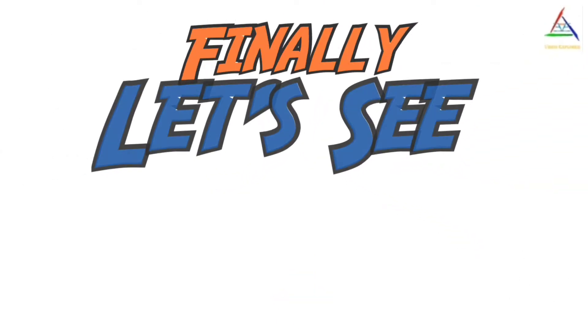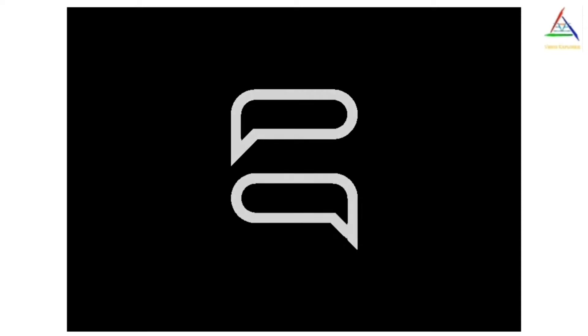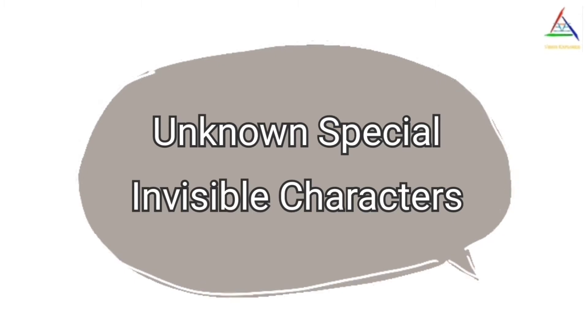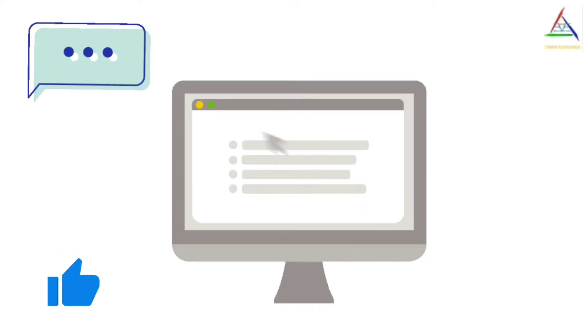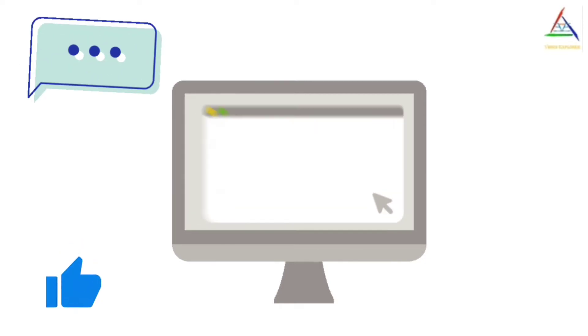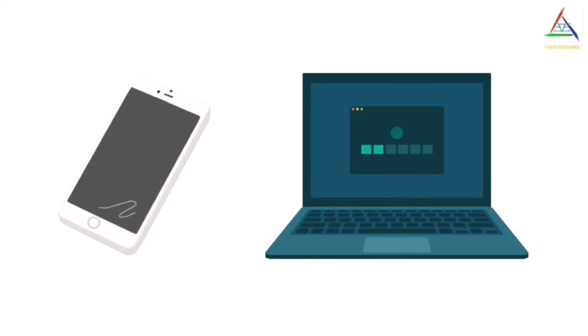Now finally let's see how these screen stacking messages work. Different messages may work with different tricks, but the common one is: these messages have some kind of unknown special invisible characters. In fact, these messages do not contain the exact number of characters what we see — they actually have a lot of invisible characters, which cannot be read by the application. And hence, when we try to open or click on them, the application does not work efficiently.